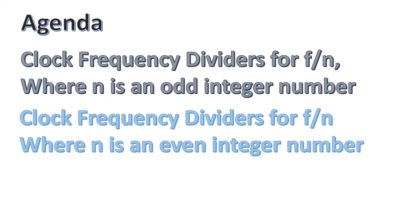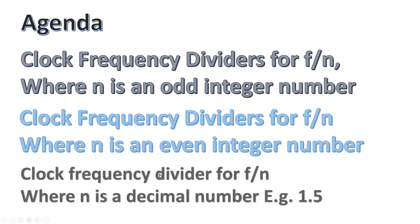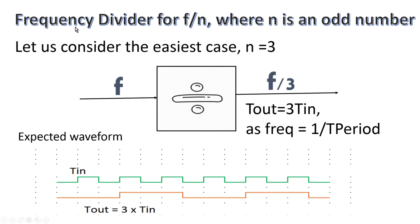I have divided this video into two parts. In the first part we will learn about clock frequency dividers to generate a signal of frequency f/n where n is an odd integer number. In the second part we will learn about clock frequency dividers where n is an even integer number. I am also planning a separate video on clock frequency dividers where n is a decimal number, for example 1.5, 3.5, etc.